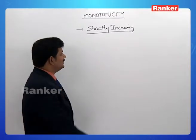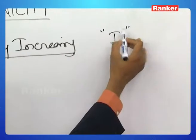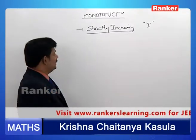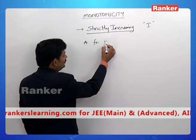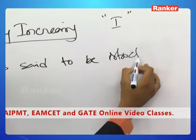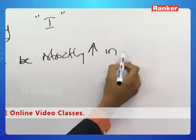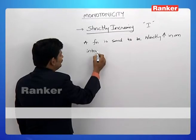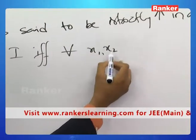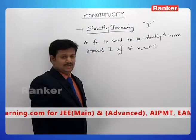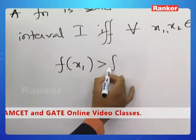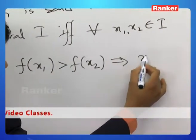It is the behavior of a function in a certain interval. We need to know whether a function is strictly increasing or not in a certain interval, let us say an interval i. A function is said to be strictly increasing in an interval i if and only if for all x1, x2 belonging to i — any two elements in the interval i — f(x1) greater than f(x2) should imply x1 is greater than x2.